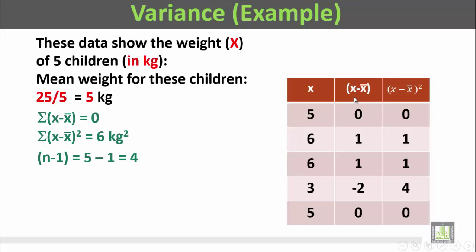Σ(x minus x̄) is equal to zero. The deviations are: 5 minus 5 = 0, 6 minus 5 = 1, 6 minus 5 = 1, 3 minus 5 = −2, 5 minus 5 = 0. Adding all these differences: 0 + 1 + 1 + (−2) + 0 equals zero. Σ(x minus x̄) is always equal to zero.